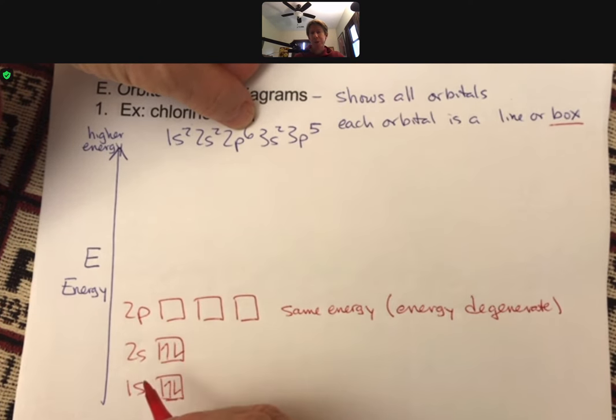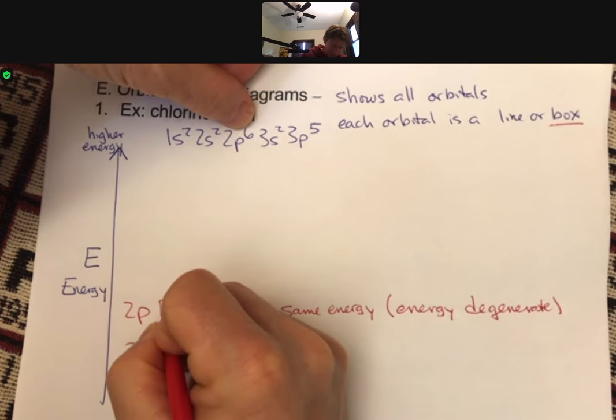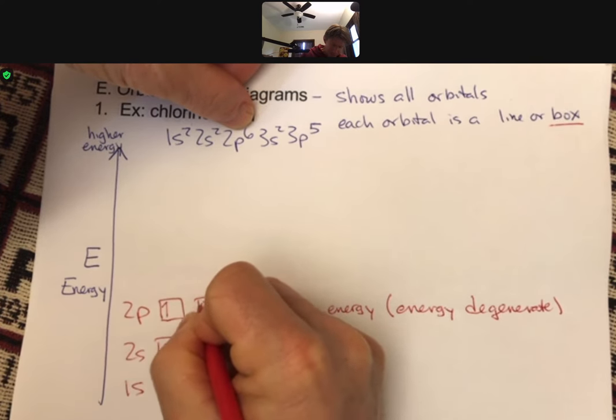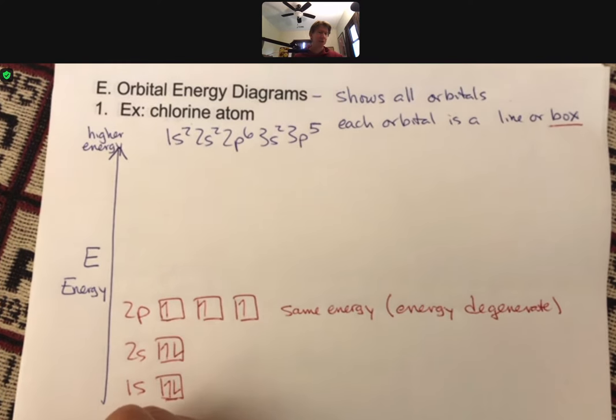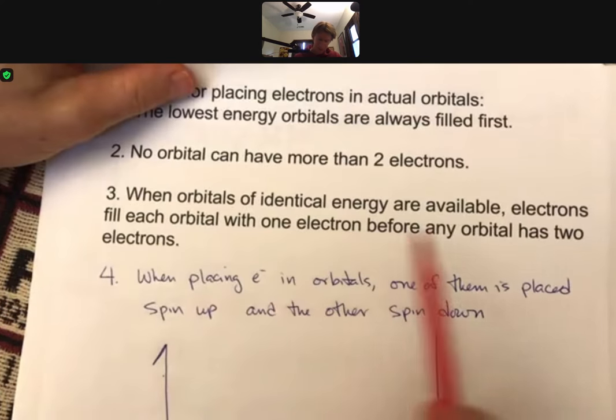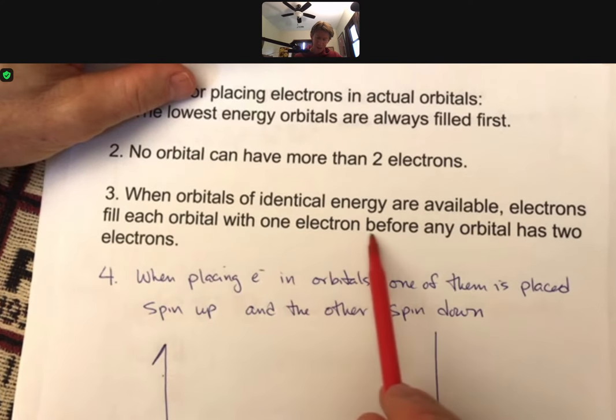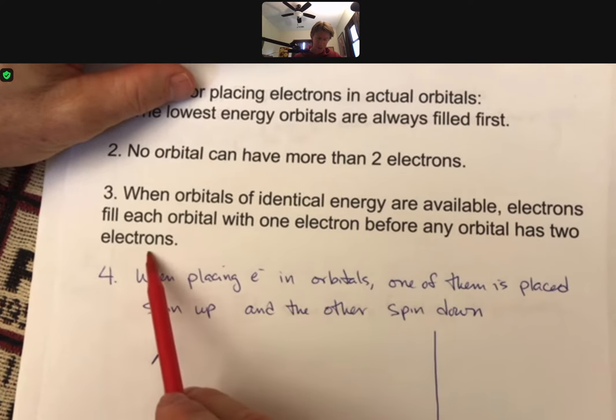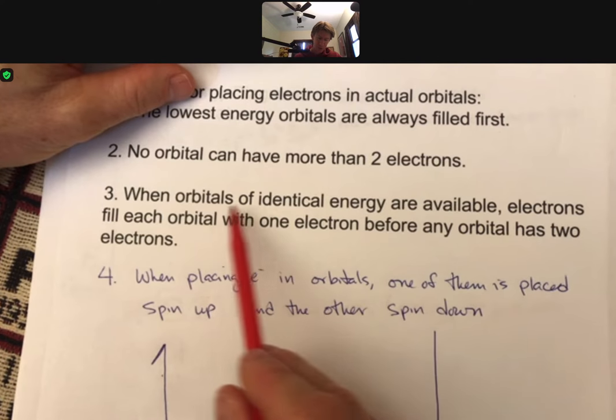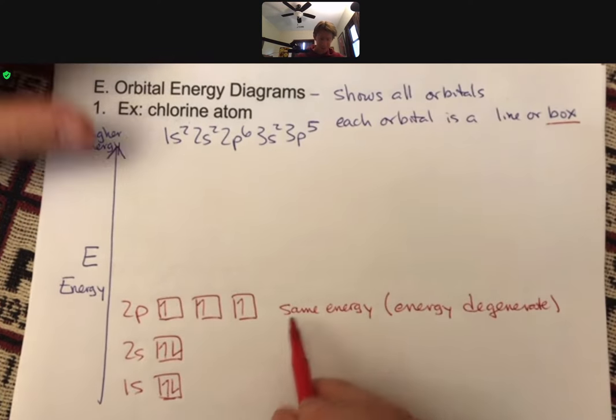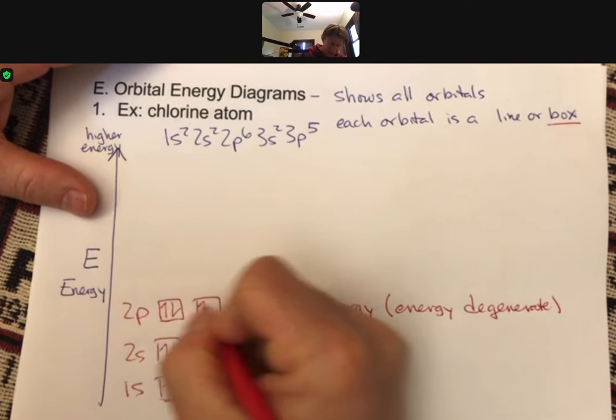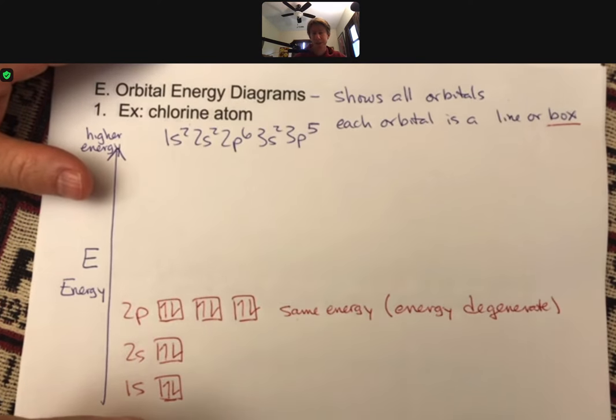And there are six electrons. But the way we put electrons into the 2p, one at a time, is spin up, spin up, spin up. And it comes back to this rule last time, fill each orbital with one electron before any orbital has two electrons, for orbitals of identical energy. Same energy, fill them one at a time, and then because there's six, we do end up filling the whole thing.